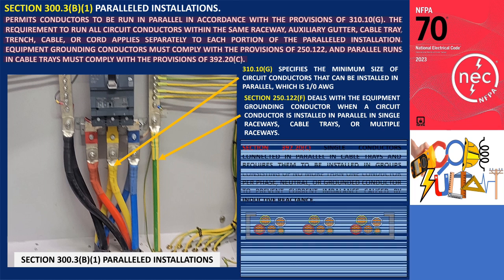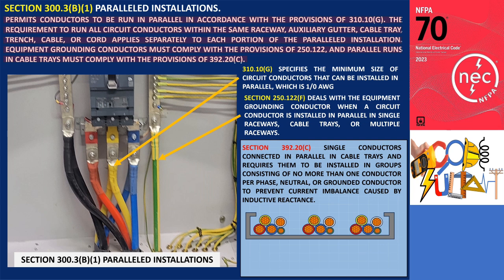Section 392.20.c addresses the installation of single conductors connected in parallel in cable trays and requires them to be installed in groups consisting of no more than one conductor per phase, neutral, or grounded conductor to prevent current imbalance caused by inductive reactance.